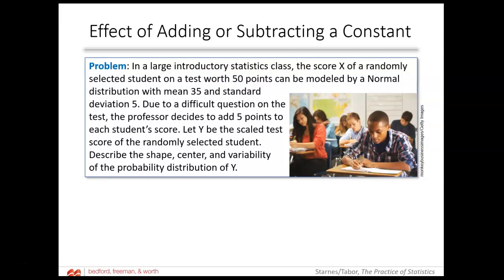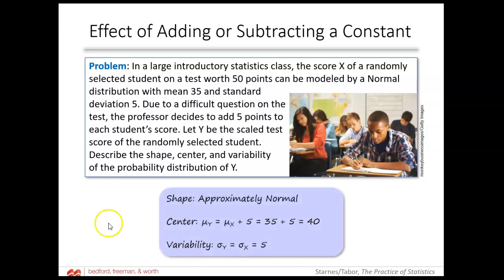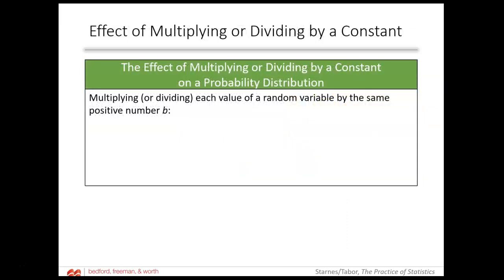In a large introductory statistics class, the score X of a randomly selected student on a test worth 50 points can be modeled by a normal distribution with mean 35 and standard deviation 5. Due to a difficult question, the professor adds 5 points to each student's score. Let Y be the scaled test score. The new mean for Y is 40 — we just add 5 to the original mean. However, the variability does not change; it's still a standard deviation of 5 points.